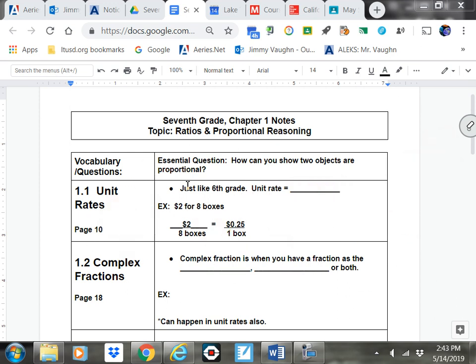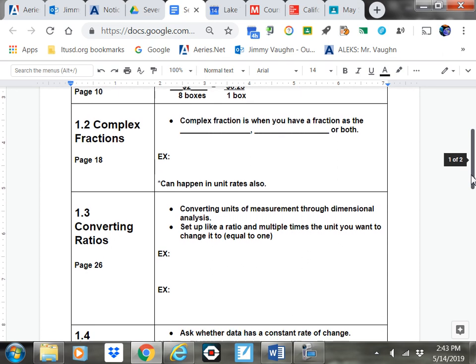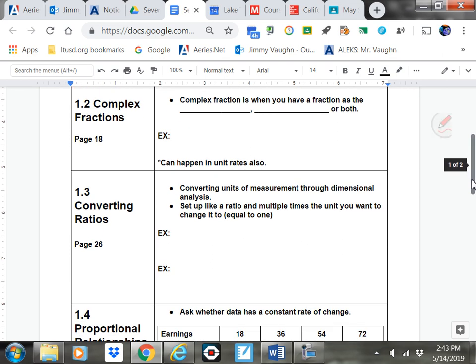Lesson two in this chapter is called complex fractions. Complex fractions is when you have a fraction in the numerator or the denominator or both. So they look kind of weird, because you've got a fraction bar over a fraction. This would be like one and one-third over one-fourth. And the way you work this out is the fraction bar is just like division. So you would turn this one and three-fourths into an improper fraction: four over three, divided by one-fourth.